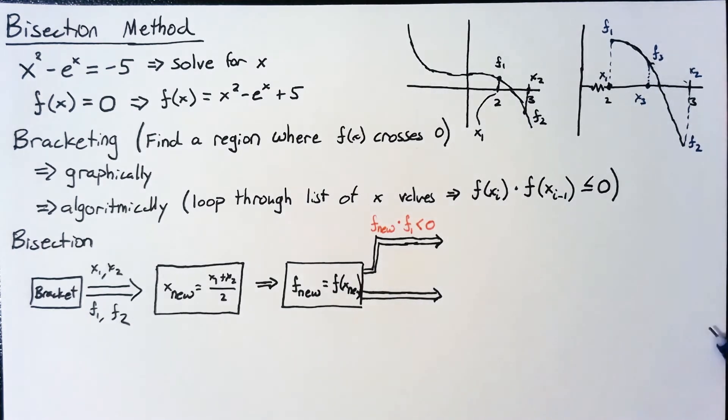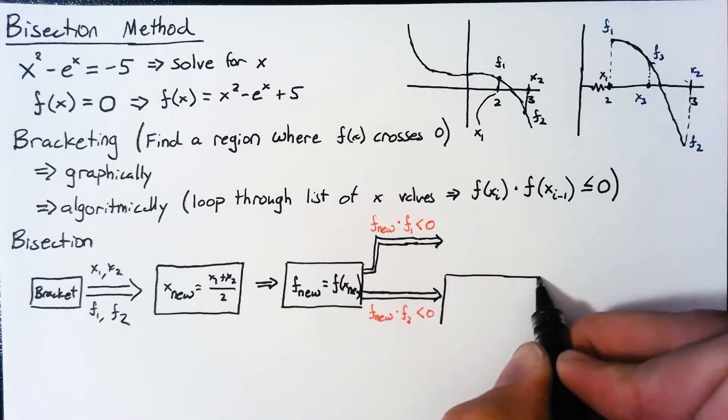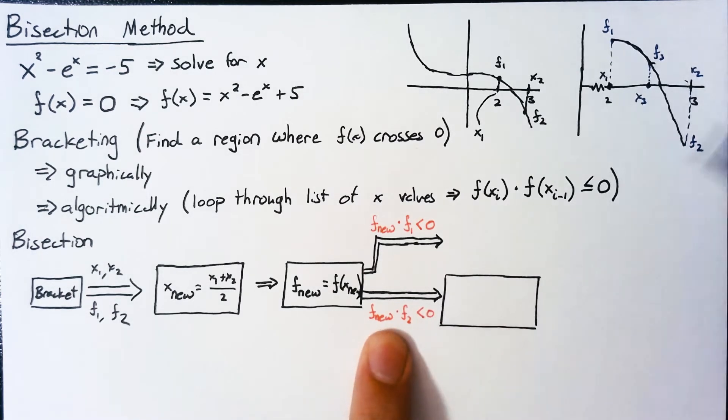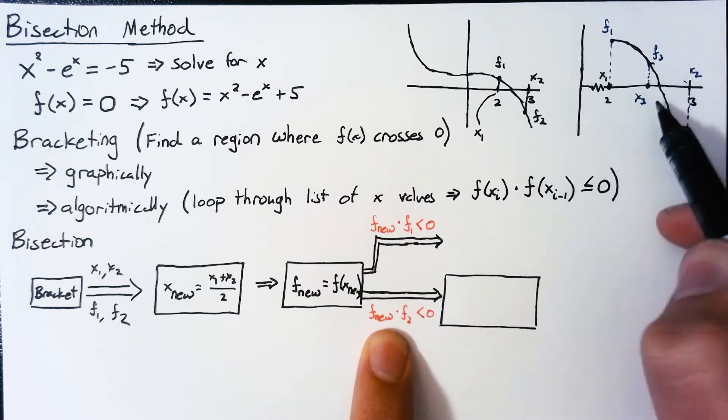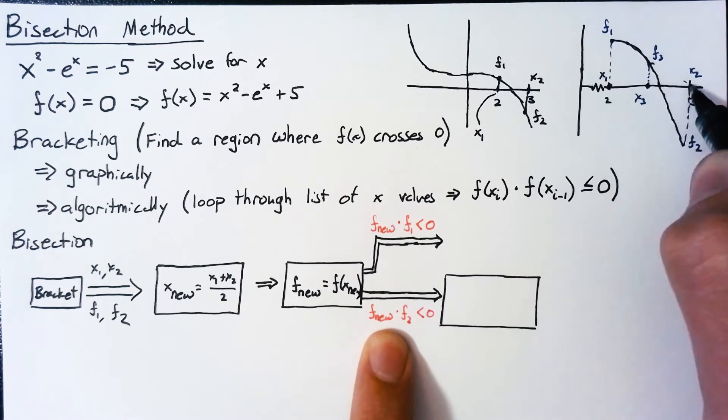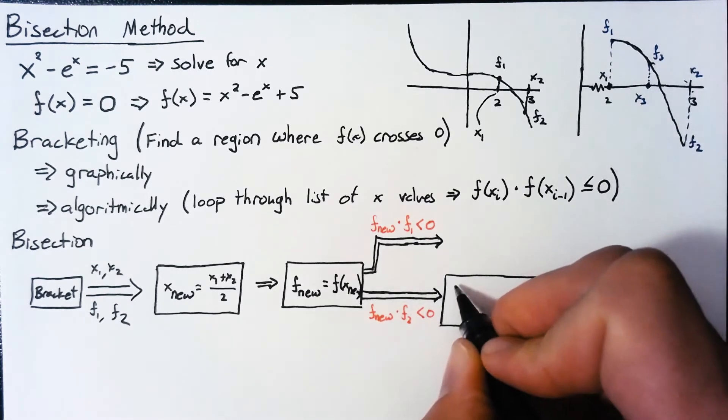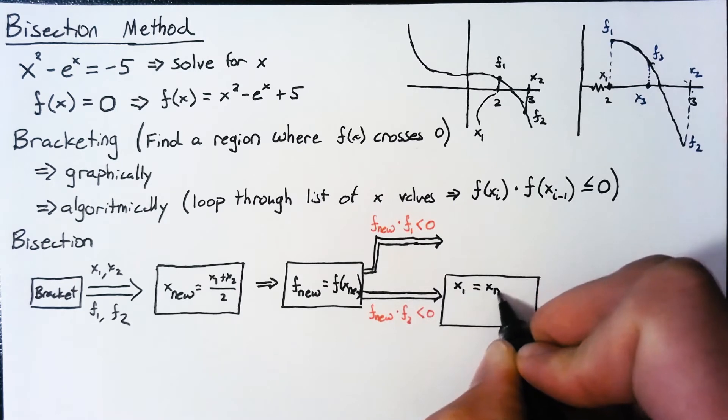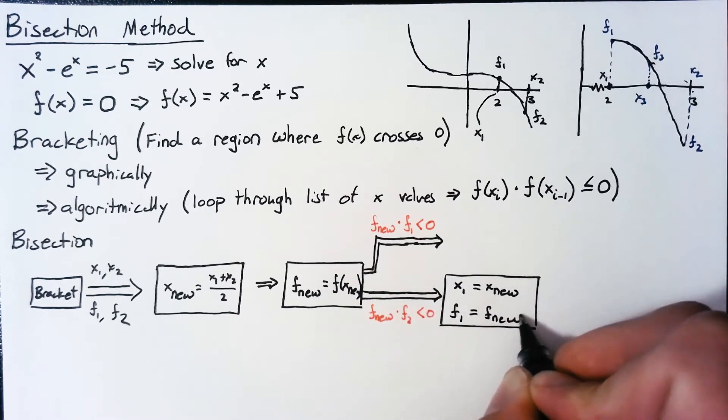So let's go ahead and write the other option. Our other option is that f nu times f2 is going to be less than 0. So what do we want to do in this case? In this situation, we know that our actual crossing point lies in between our new x location and x2. So if we want to repeat this process, do the same thing over again and refine our guess, we need to set our new points as these two values instead of our original two values. So x2 doesn't need to change. It can stay exactly as it is. But x1 needs to switch to our x nu. So we're going to set x1 equal to x nu and override that value. And we're going to set f1 equal to f nu so that we can carry that along as well.